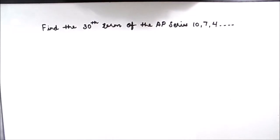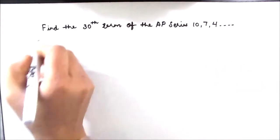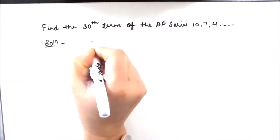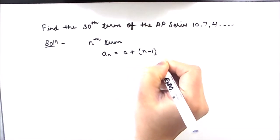Hello everyone, in this short video we are going to find the 30th term of the AP series 10, 7, 4, and so on. The formula for finding the nth term of the AP series is a plus n minus 1 times d.